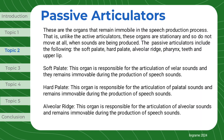Passive articulators are the organs that remain immobile in the speech production process. That is, unlike the active articulators, these organs are stationary and do not move at all when sounds are being produced. The passive articulators include the following: the soft palate, hard palate, alveolar ridge, pharynx, teeth, and upper lip.